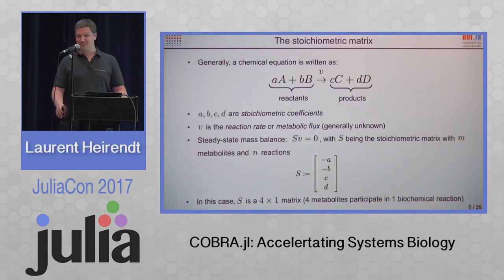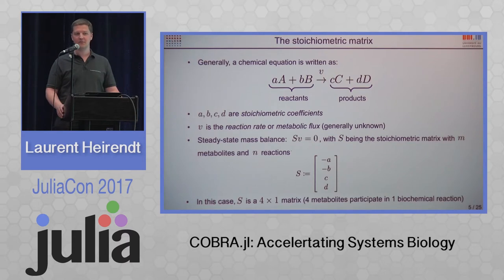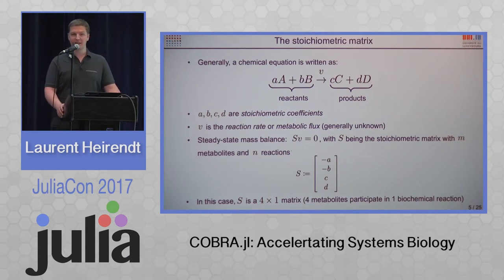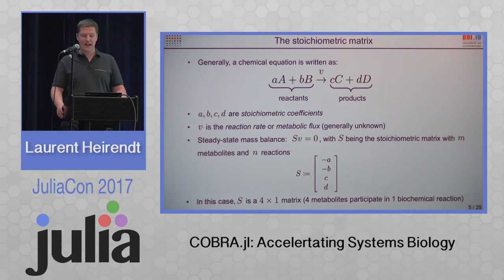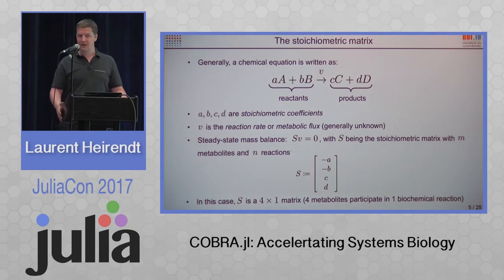But it gets really, really complicated when these networks become very big. To give you some background: any general chemical or biochemical reaction is written as a quantity small a of reactant A and quantity small b of reactant B acting together — those are the reactants — and they give one or more products, in this example C and D. The small letters are called the stoichiometric coefficients, and this reaction, be it in engineering, biochemistry, or biology, happens at a certain reaction rate, small v.